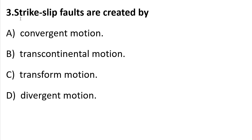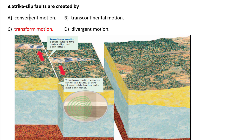Question 3: Strike-slip faults are created by — A) convergent motion, B) transcendent motion, C) transform motion, D) divergent motion. Transform motion occurs when plates slide past each other — that means move horizontally. Transform motion creates strike-slip faults, where blocks of crust slide horizontally past each other. So according to that information, the answer is C — transform motion.